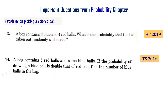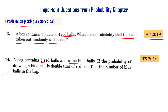Problems on finding probability of picking a specific colored ball are very important. A box contains three blue and four red colored balls. What is the probability that the ball selected randomly will be red? This is from the AP Public Exam 2019. A bag contains five red colored balls and some blue colored balls. If the probability of drawing a blue colored ball is double that of a red ball, find the number of blue colored balls in the bag — from the Telangana Public Exam 2016.